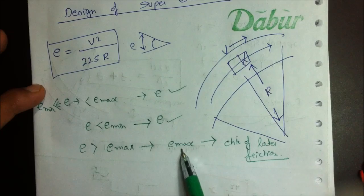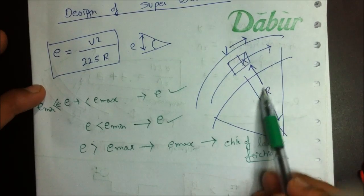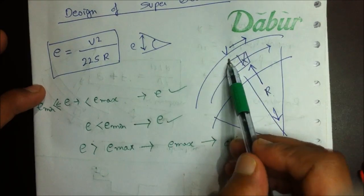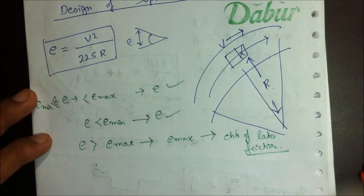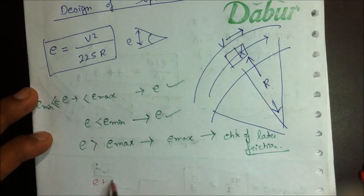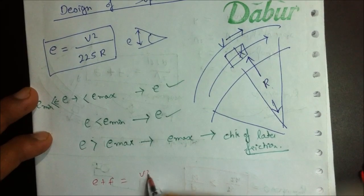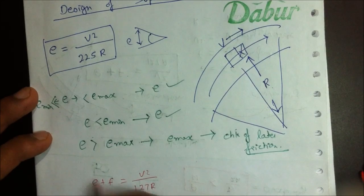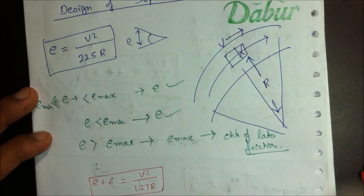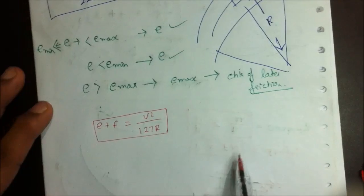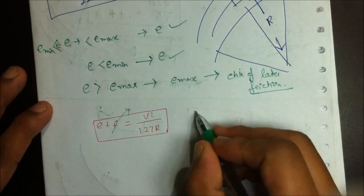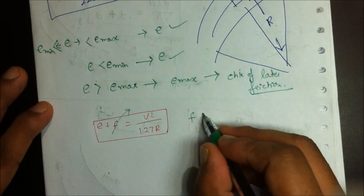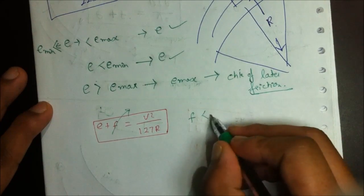Now, knowing E equals E_max, with the radius of the curve and vehicle velocity also given, we use the design formula: E plus F equals V squared upon 127R. Through this formula, we calculate the friction factor F. If this friction factor F is less than F_maximum — which is 0.15 for lateral friction — we provide E_max as the design super elevation.